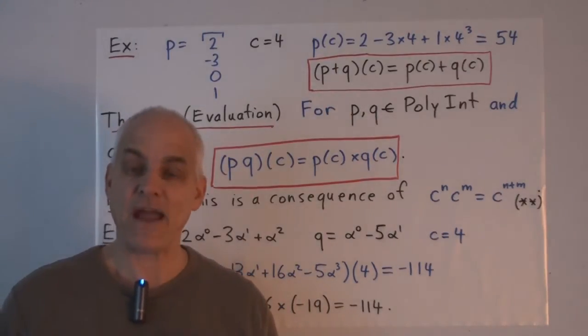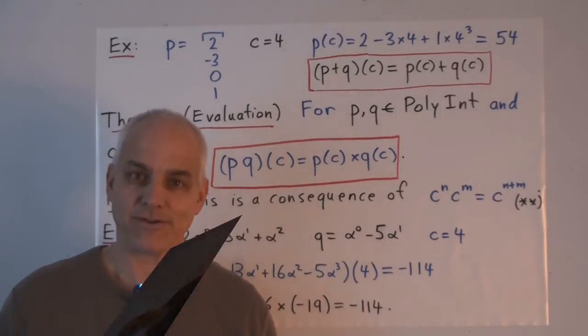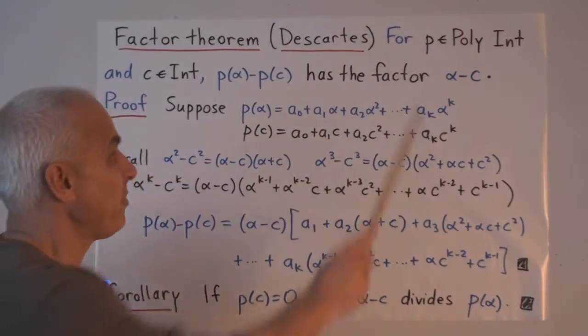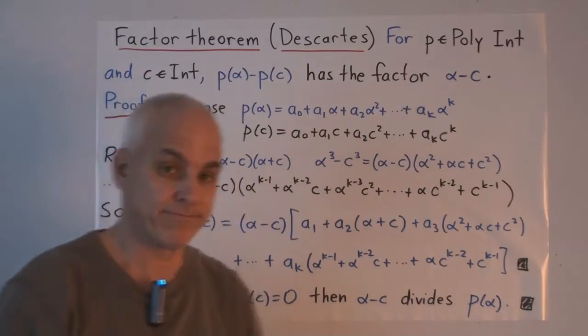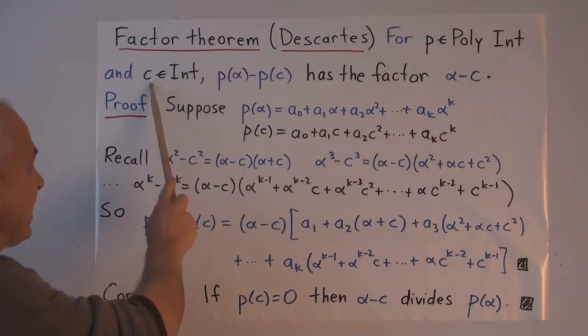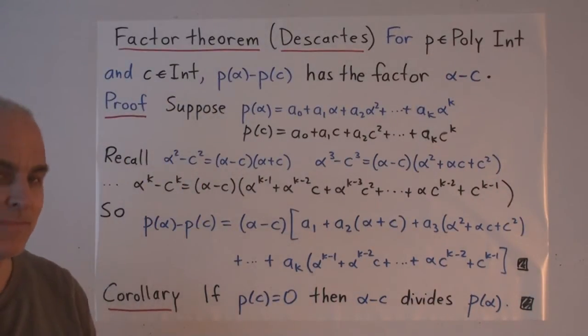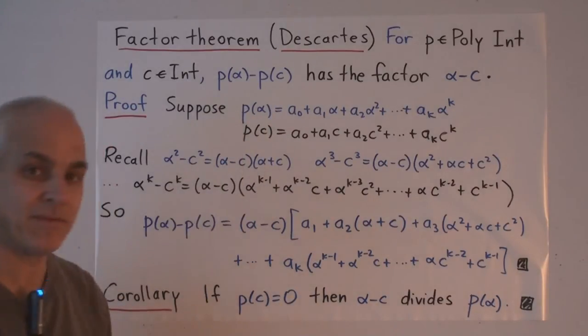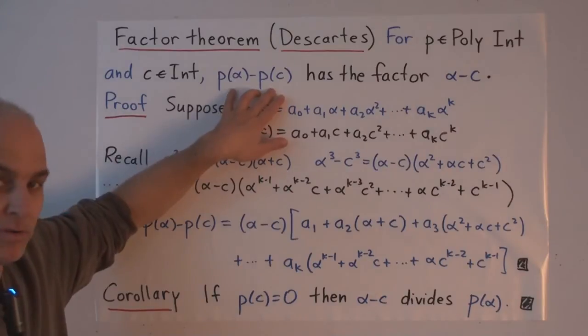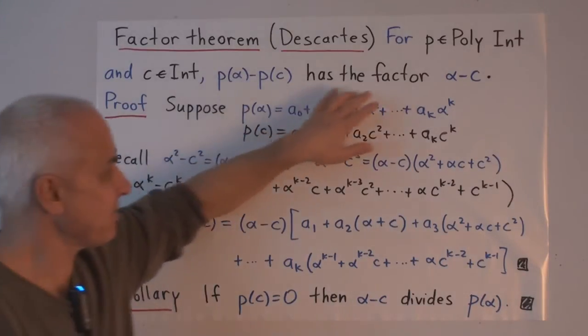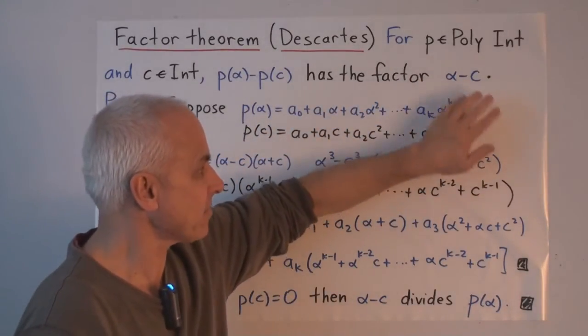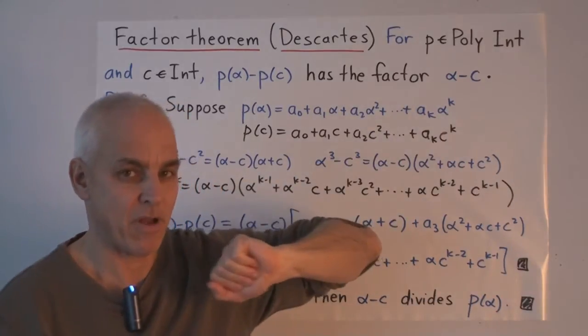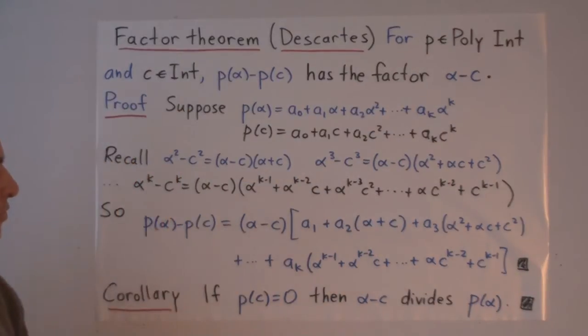Now let's look at the factor theorem, which goes back to Descartes. The theorem says that if P is an integral poly number and C is an integer, then the poly number P of alpha minus P of C, where we think of this as a poly number, has the factor alpha minus C, where this is also a poly number. Let's have a look at the proof.